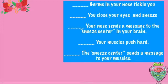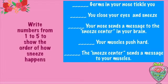Now let's go with the next activity to understand better what happens when we sneeze. Here we have five sentences and we have to write numbers one to five to show the order of how a sneeze happens. Let's read together: germs in your nose tickle you. You close your eyes and sneeze. Your nose sends a message to the sneeze center in your brain. Your muscles push hard. And the sneeze center sends a message to your muscles.